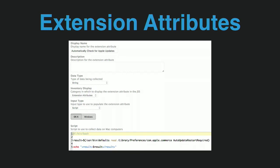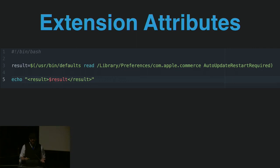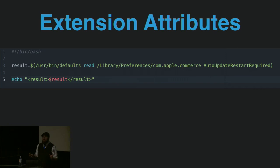You can see here how the extension attribute is set up. This is a really simple two-liner extension attribute where we're just taking a 'defaults read' command for the plist that contains the setting for whether computers check for updates automatically or not, then echoing that back in a pair of result XML tags — that's what gets read back up into Jamf Pro and put into your inventory. It's going to be a boolean value: zero for false, one for true.